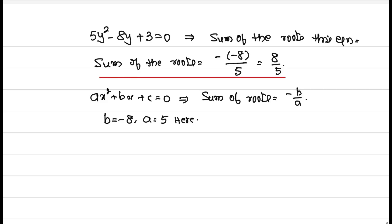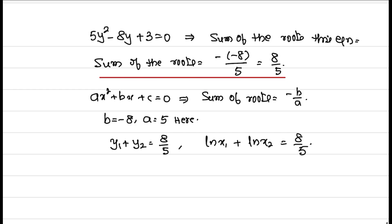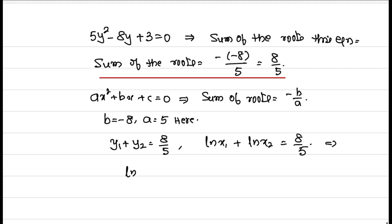Sum of the roots means y₁ + y₂ = 8/5. Since y = ln(x), this means ln(x₁) + ln(x₂) = 8/5. Using the property ln(a) + ln(b) = ln(a·b), we get ln(x₁·x₂) = 8/5. Since ln(x) = a implies x = e^a, therefore x₁·x₂ = e^(8/5).